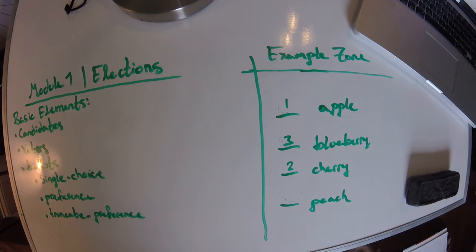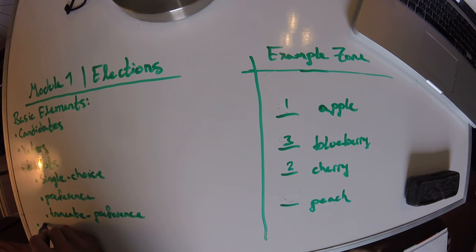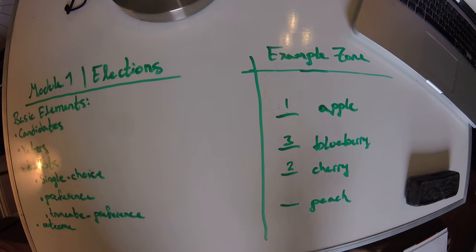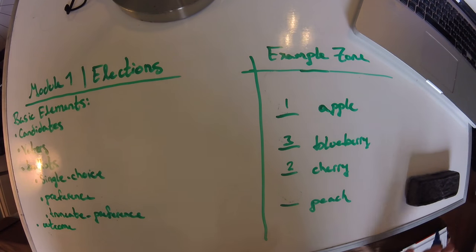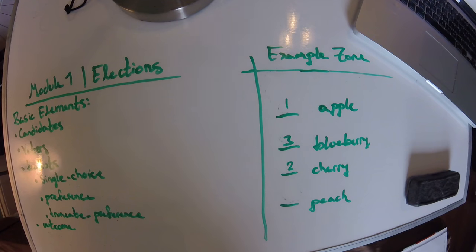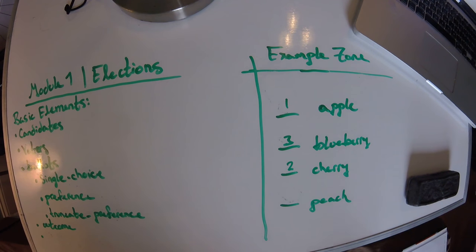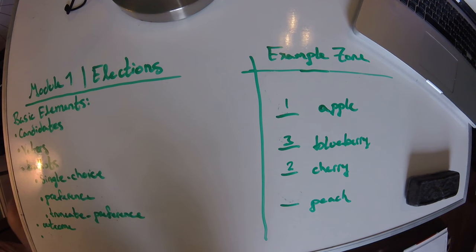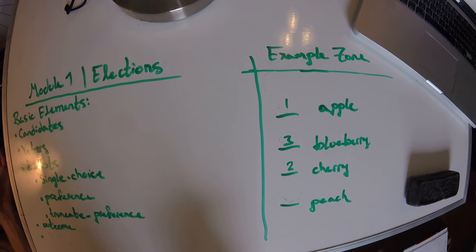And then the outcome — another important piece. This is just the result of the election. In this case, we make a pie, and it's a certain type of pie, whatever pie we chose.